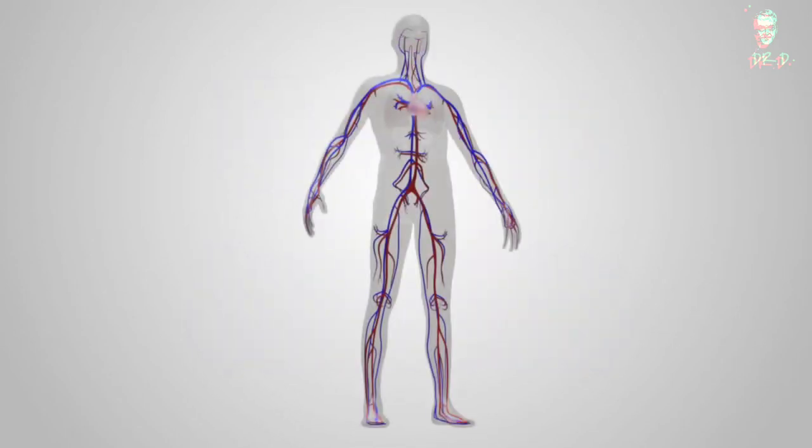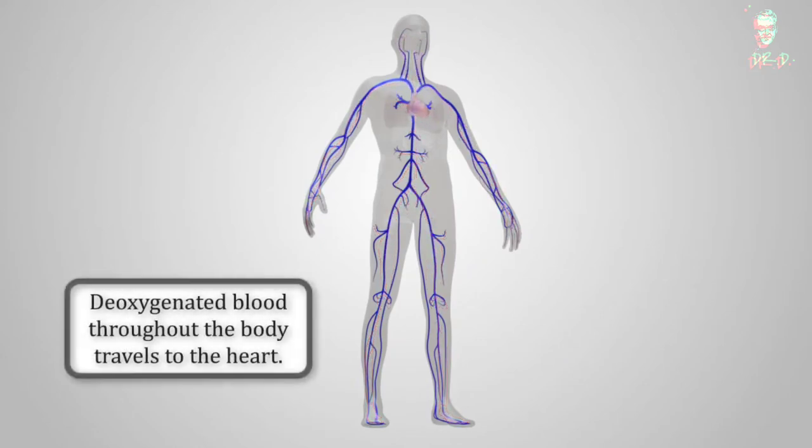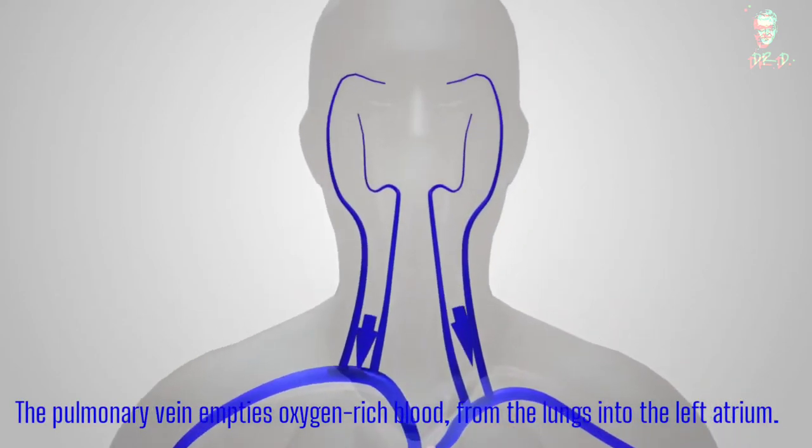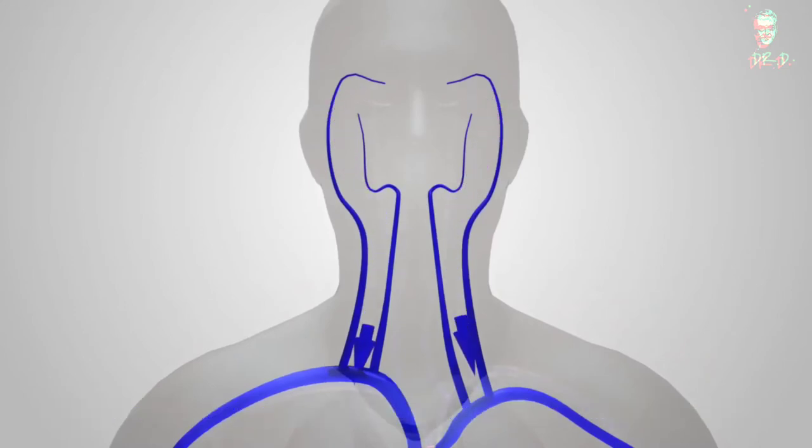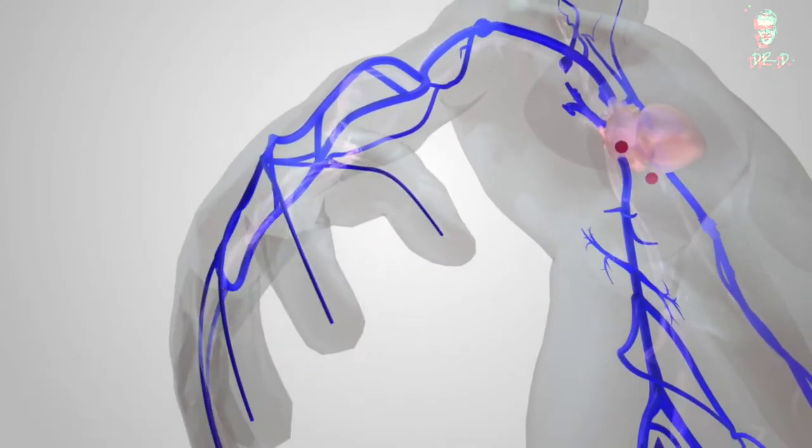Blood enters the heart through two large veins, the inferior and superior vena cava, emptying oxygen-poor blood from the body into the right atrium. The pulmonary vein empties oxygen-rich blood from the lungs into the left atrium.